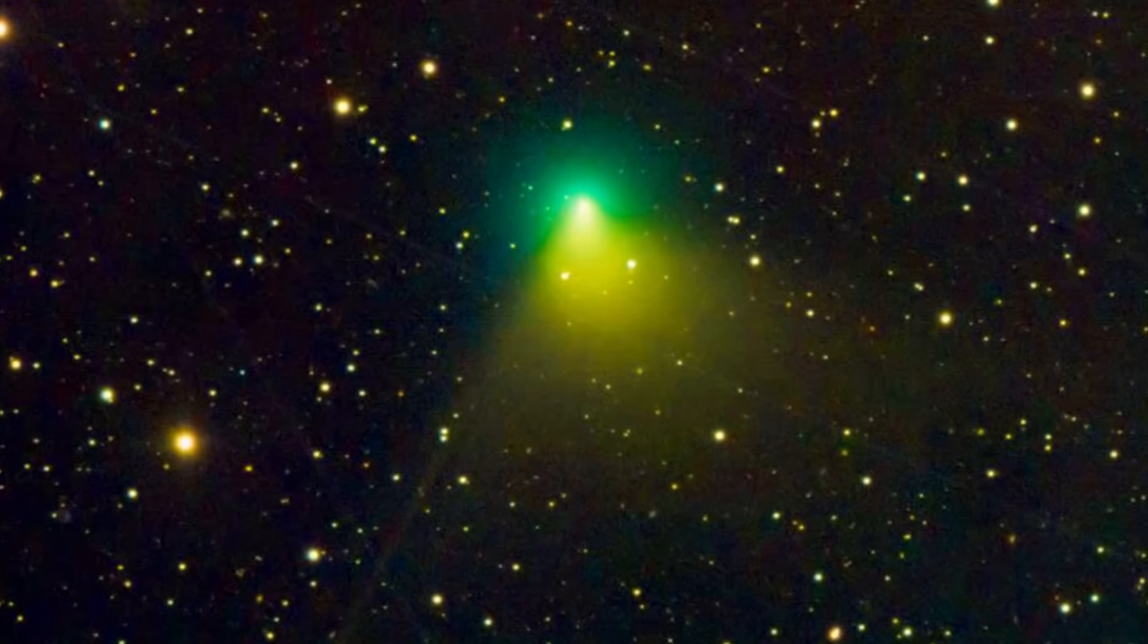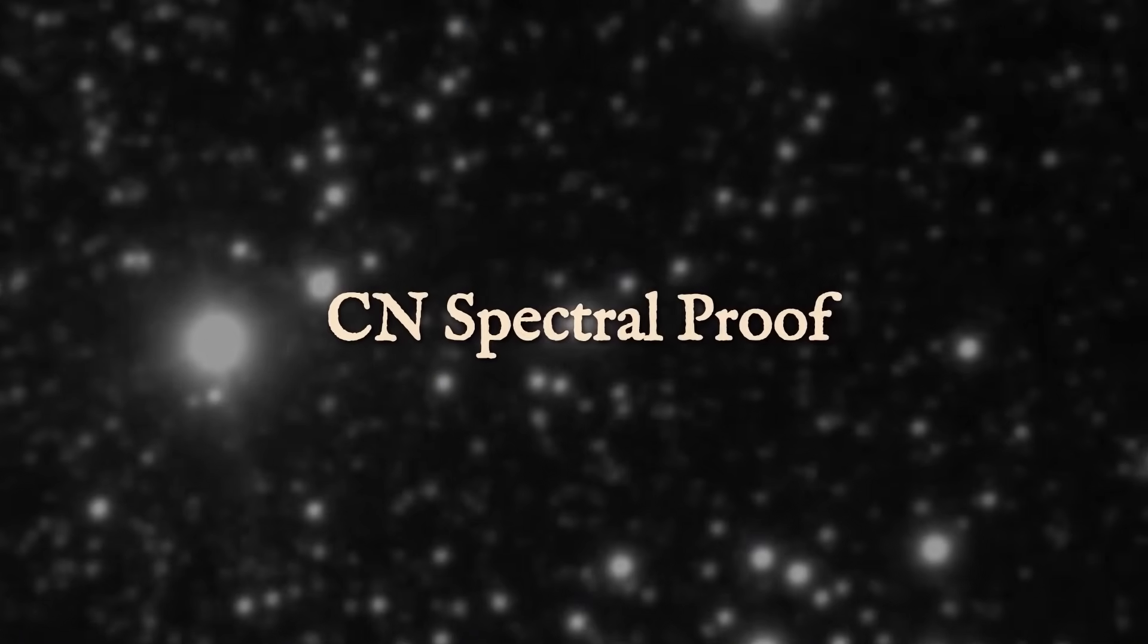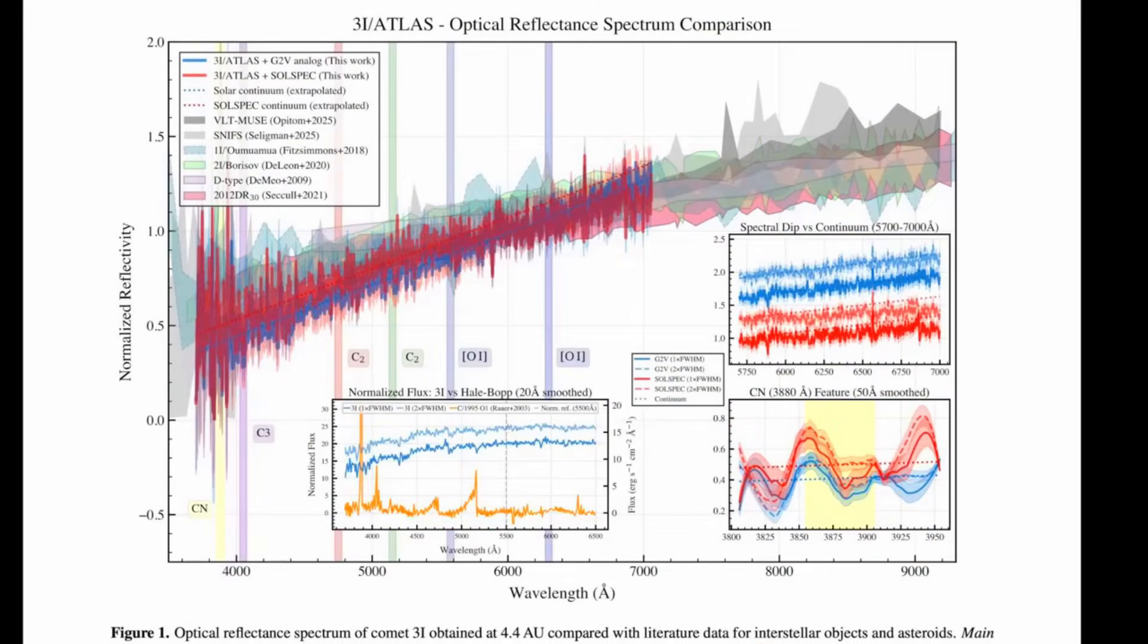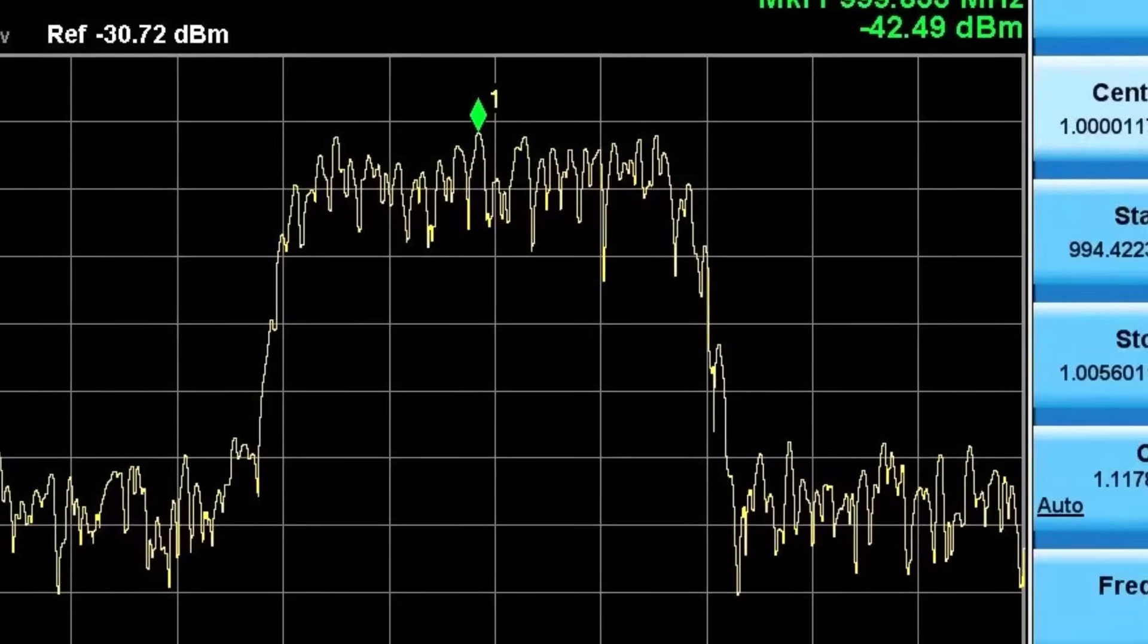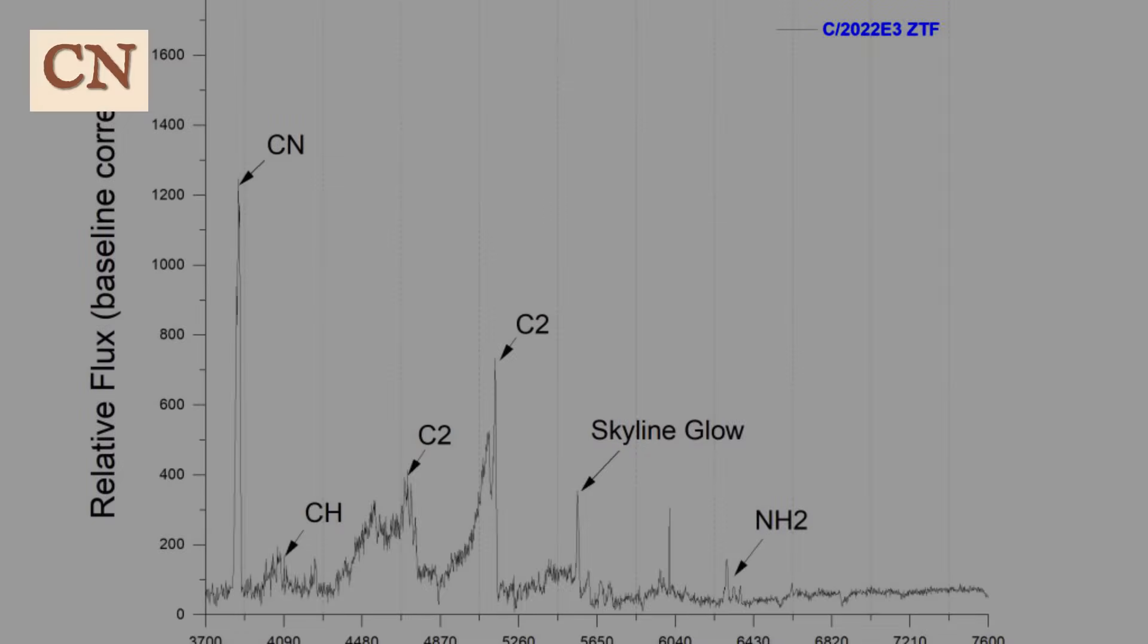The timing matched the first reports of the comet's emerald glow, a direct link between the chemistry in the coma and the shifting color seen by ground-based observers. The VLT team, working through the night, watched as the CN line overwhelmed the background continuum. Each data frame added weight to the idea that cyanide, not dicarbon, was now the main player.